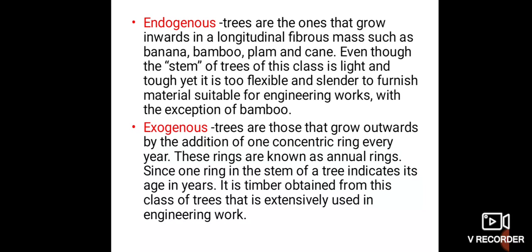Exogenous trees are those that grow outwards by the addition of one concentric ring every year. These rings are known as annular rings. Since one ring in the stem of a tree indicates one year of growth, the annular ring indicates the age of the tree in years.